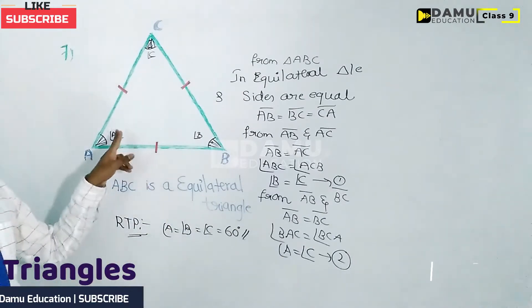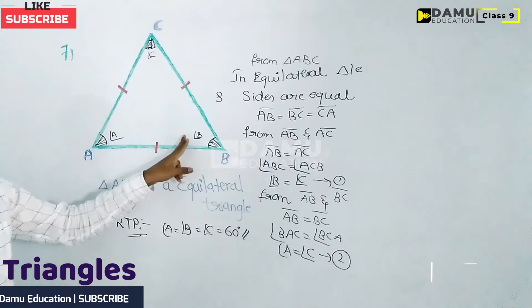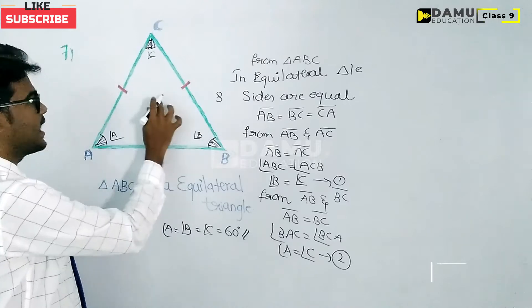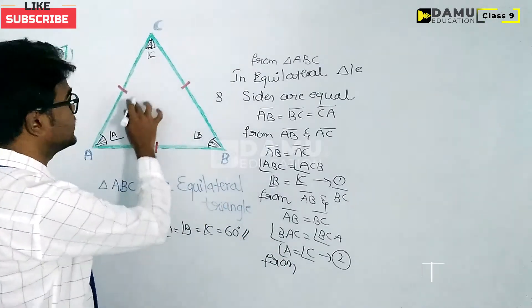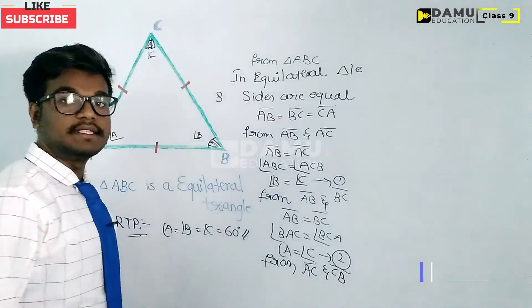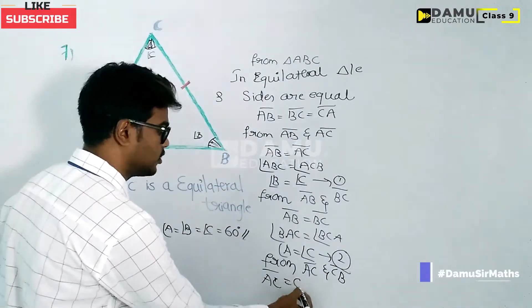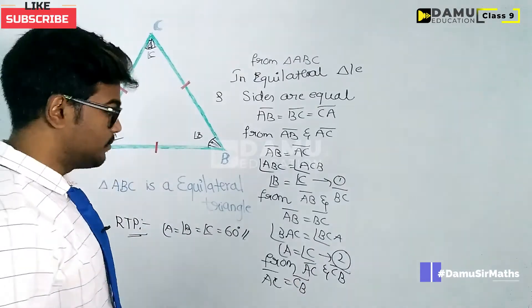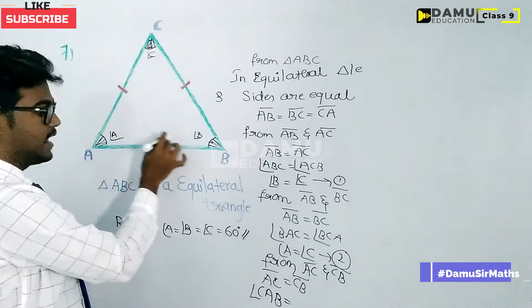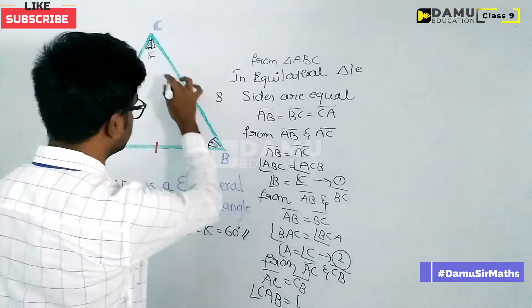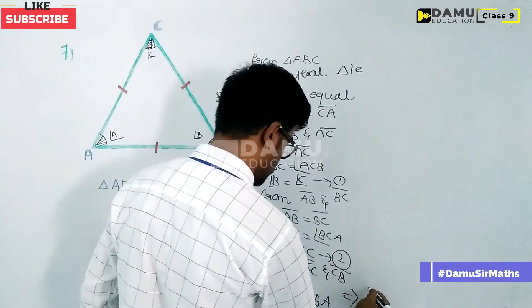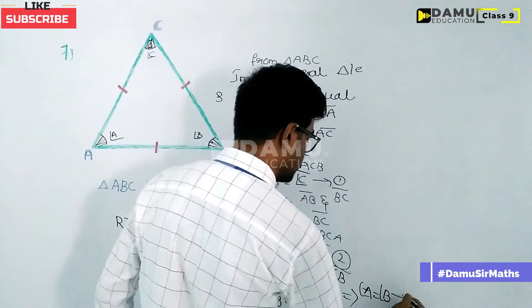Next, we take the combination of AC and CB. Since AC equals CB, the opposite angles for these two sides are equal. Angle CAB will be equal to angle CBA. So angle A will be equal to angle B. Let us call this equation 3.